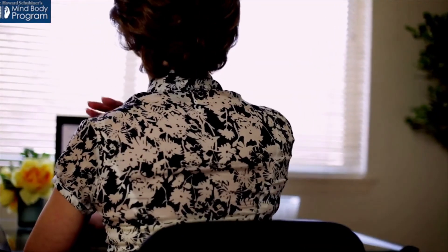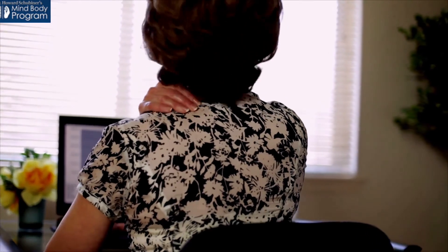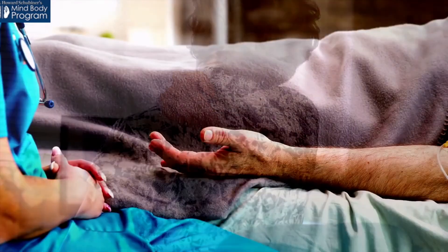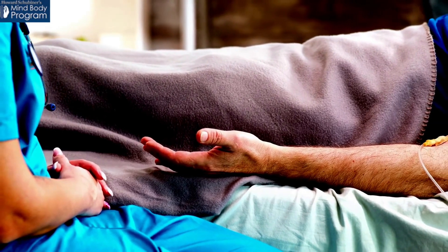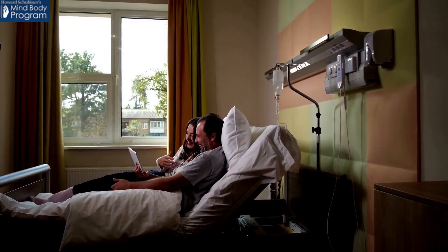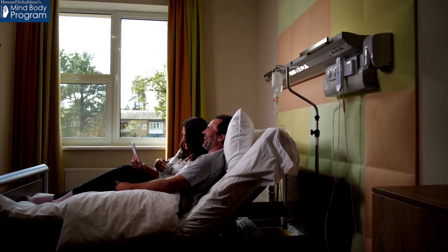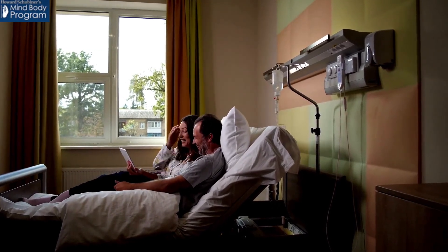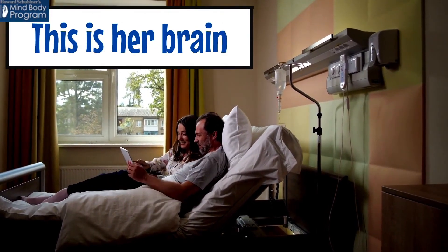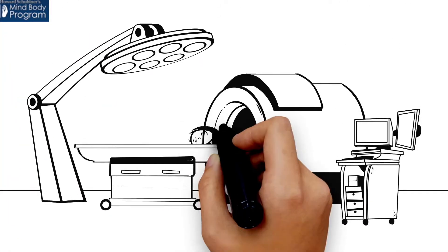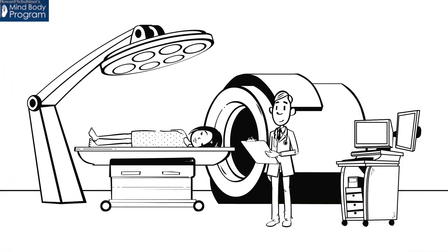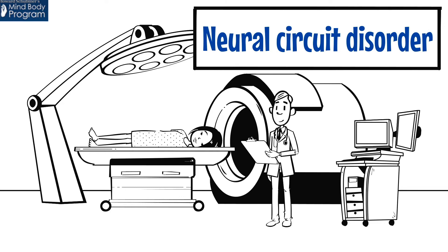Maria had pain every day between her shoulder blades for two months. It began when her husband had surgery and she feared he would die. Gradually it got better, and often it was not there. But as soon as she thought about the pain, it would reappear. This is her brain. Once a doctor has helped you to be sure that there is no serious structural problem, there are many clues you can use to confirm that you have a neural circuit disorder.